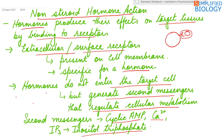Second messengers are just like mobile phones. Mobile phones allow two persons to interact who are not near each other. So second messengers act like mobile phones, interacting between the hormones and the cell. They carry the information from the hormones and transfer it into the cell.